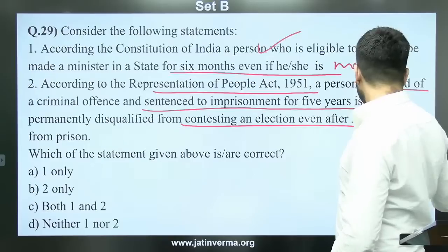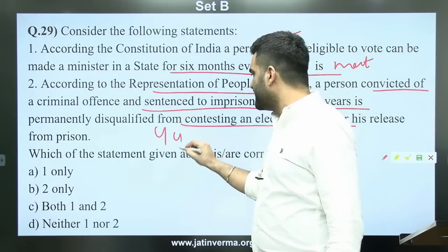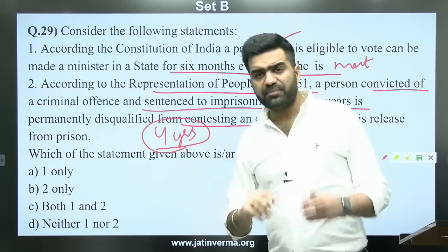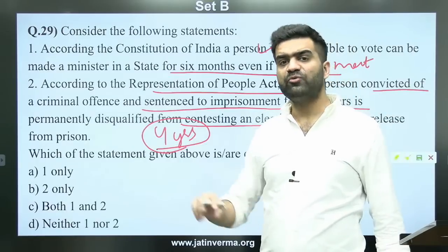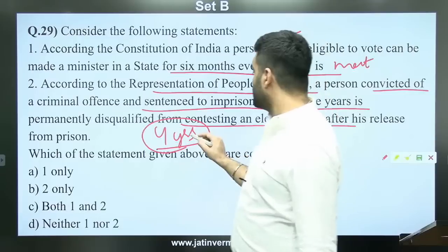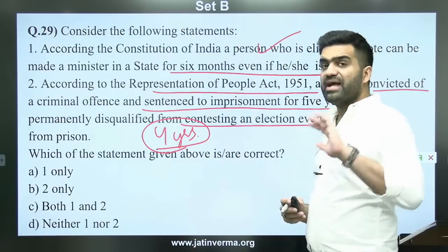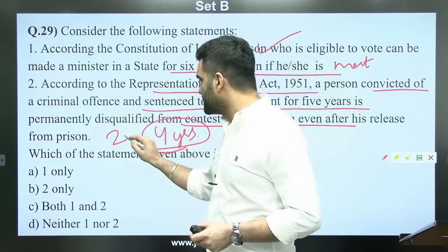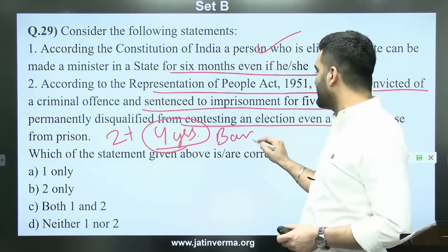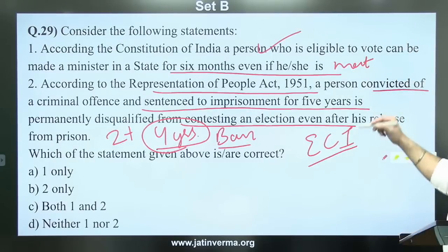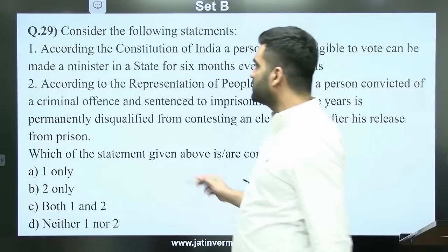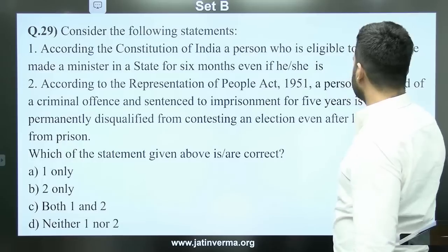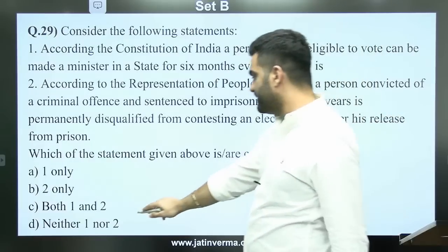This disqualification case is currently sub-judice in the Supreme Court. Under the RPA, if any person receives a sentence of more than 2 years — like Sasikala or Lalu Prasad Yadav in the fodder scam — they face a 2-year sentence plus a 4-year ban. The Election Commission of India has filed a petition in the Supreme Court for a lifetime ban, but no decision has come yet. The answer to question 29 is D — neither 1 nor 2.